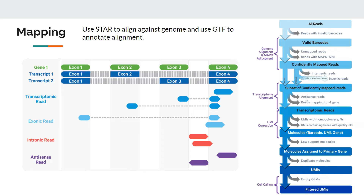Cell Ranger also excludes antisense reads, which are discarded. Additionally, any reads mapping to more than one gene — multi-mapped reads — are discarded, because one alignment would be primary and one secondary. Cell Ranger discards such multiply-mapped reads. At this point, we have good barcodes and confidently mapped reads.